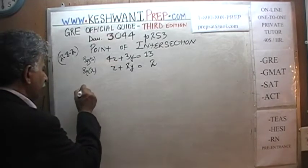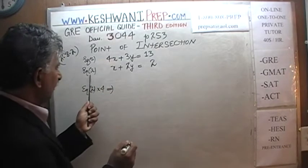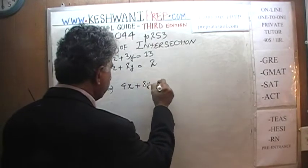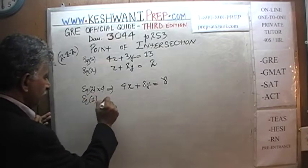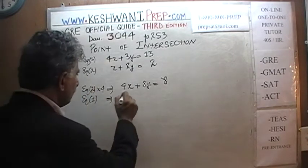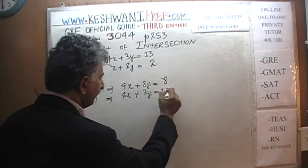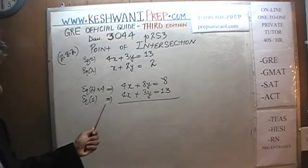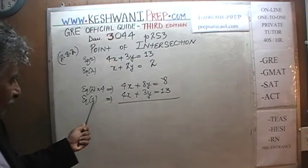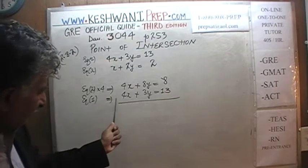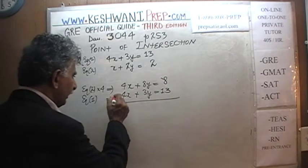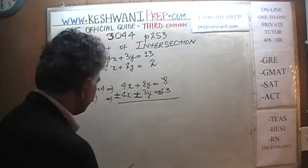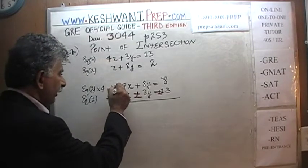Let's just take equation 2 and multiply it by 4. That implies x becomes 4x, 2y becomes 8y, and 2 times 4 is 8. Equation 1 we can use just the way it is: 4x plus 3y equals 13. Let's subtract the bottom equation from the top equation — it is always a good idea to change all the signs. This positive 4x becomes negative, this positive 3y becomes negative, and this positive 13 becomes negative.